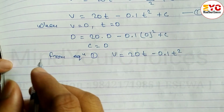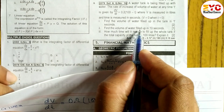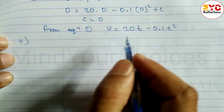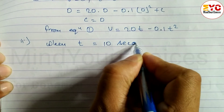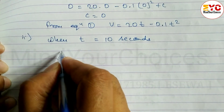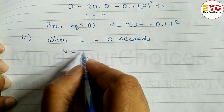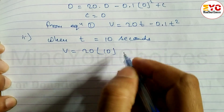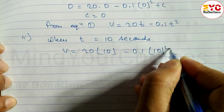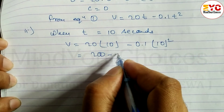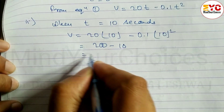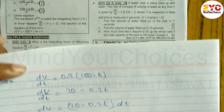Part 2: find the volume at t = 10 seconds. Using equation 2, when t = 10: v = 20(10) − 0.1(10)² = 200 − 0.1(100) = 200 − 10 = 190 litres.